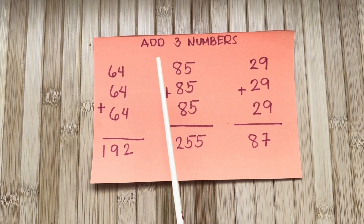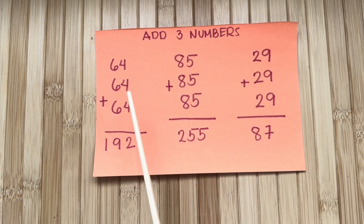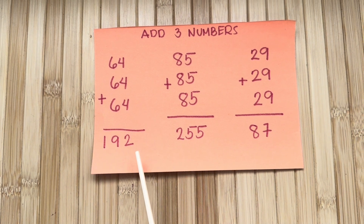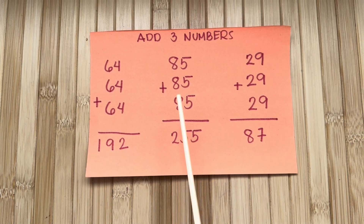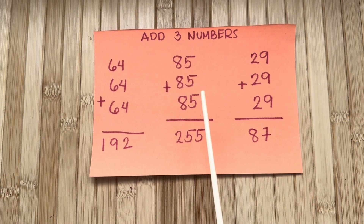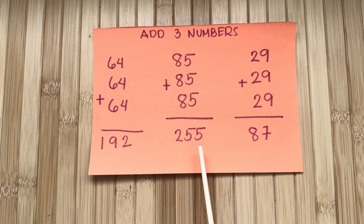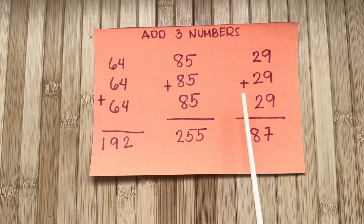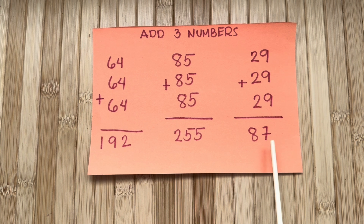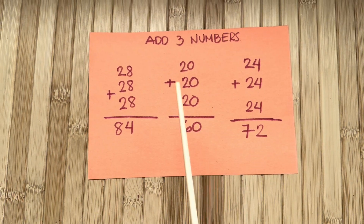Let's add three numbers. 64 plus 64 plus 64 is equals to 192. 85 plus 85 plus 85 is equals to 255. Next, 29 plus 29 plus 29 is equals to 87.